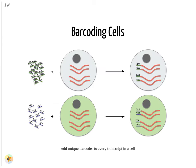Once isolated, cells can be barcoded. Barcodes are unique sequences that are added to each RNA molecule. They are not unique to the molecule, but unique to the cell such that any two RNA molecules will be tagged by the same cell barcode should they exist in the same cell. RNA molecules from different cells will have different cell barcodes.